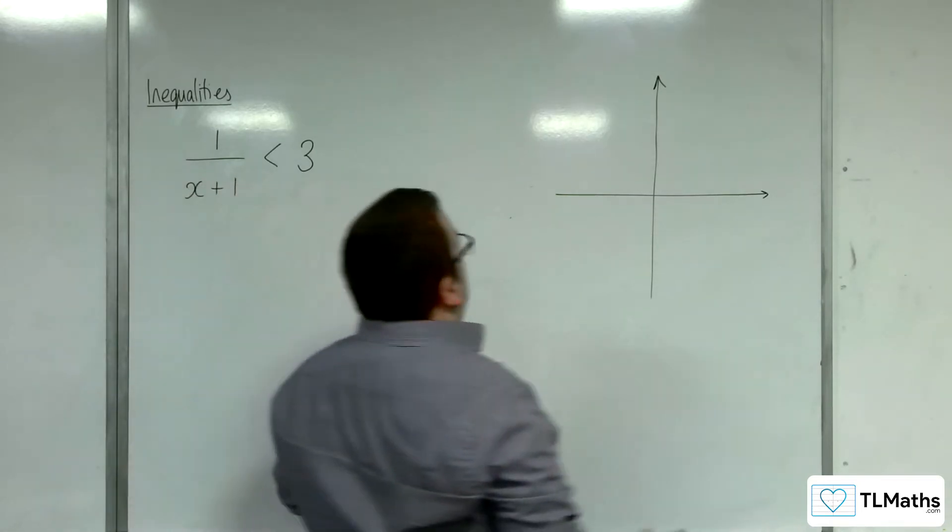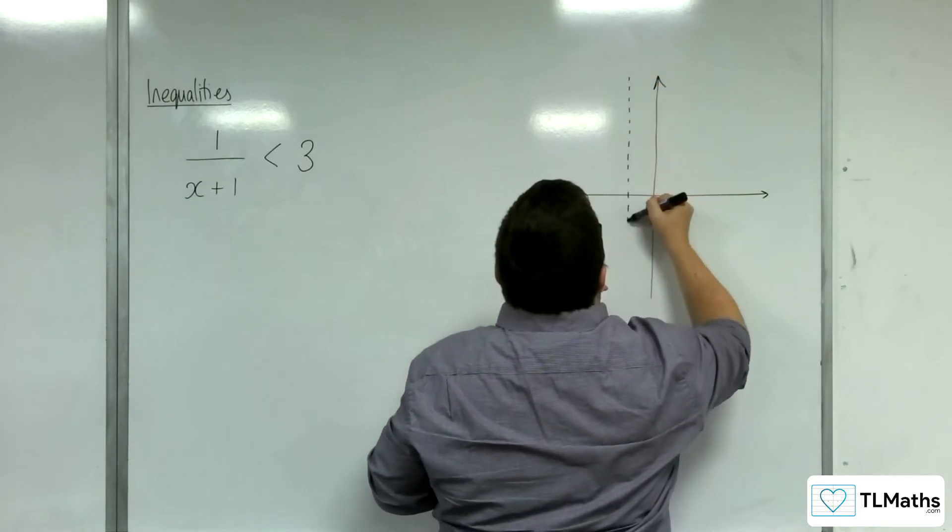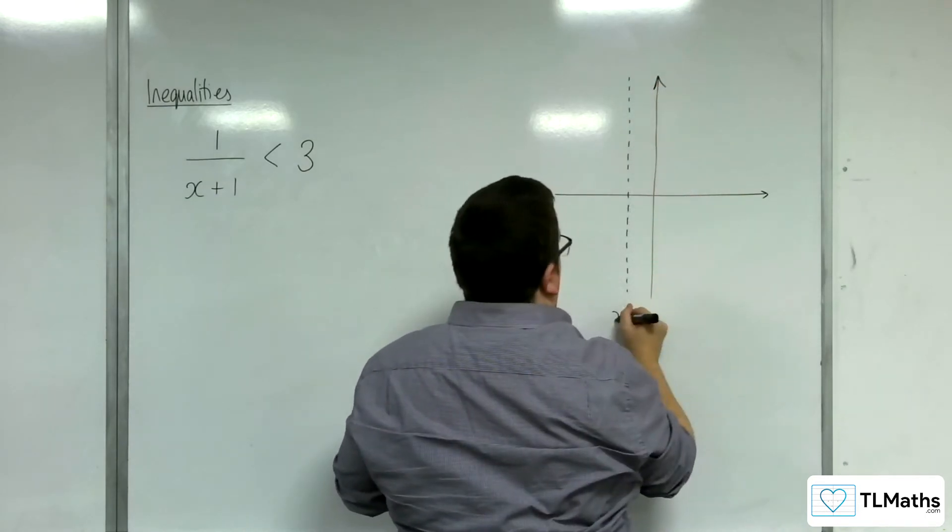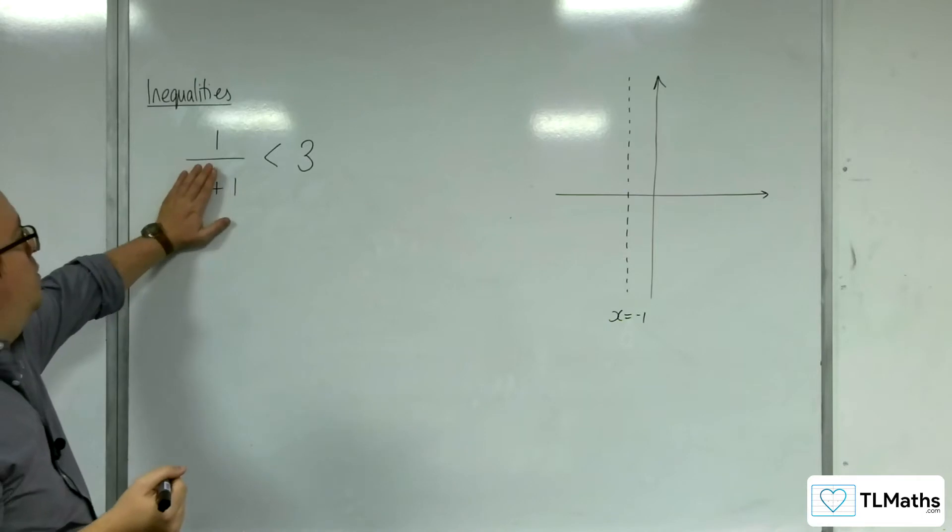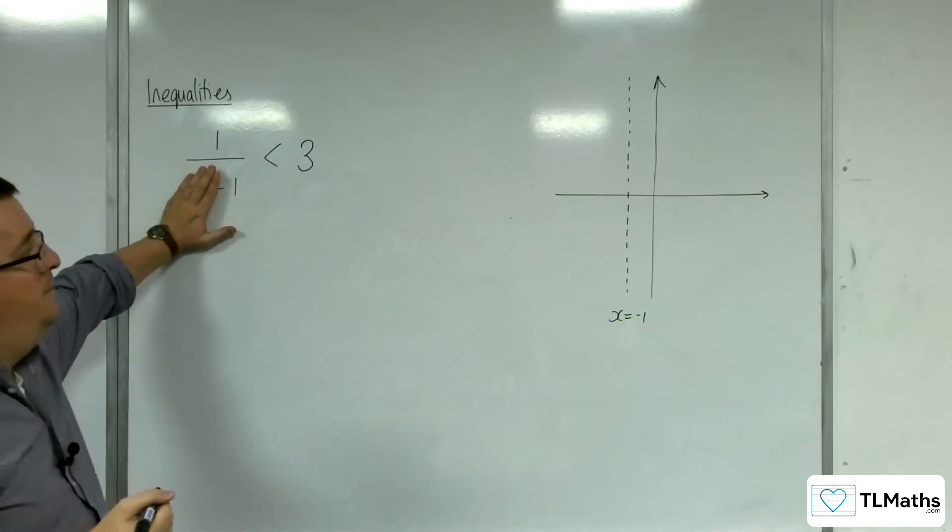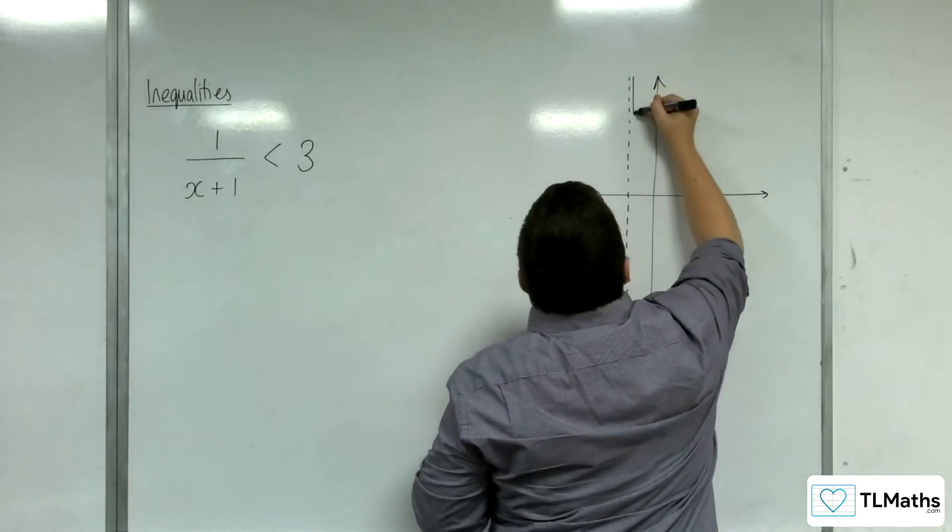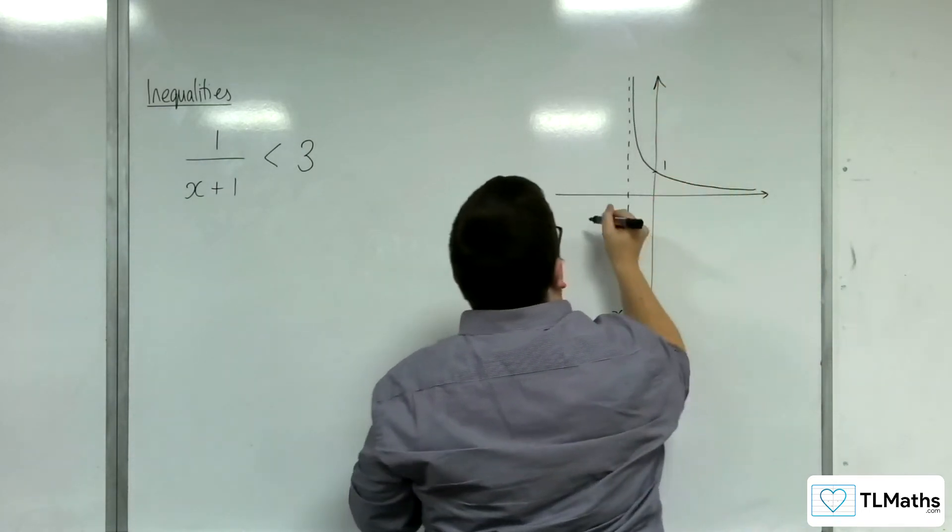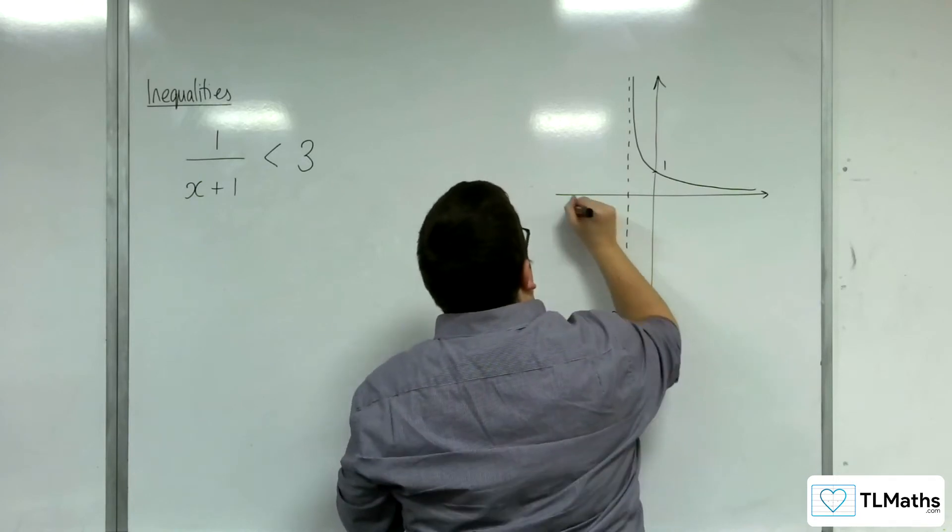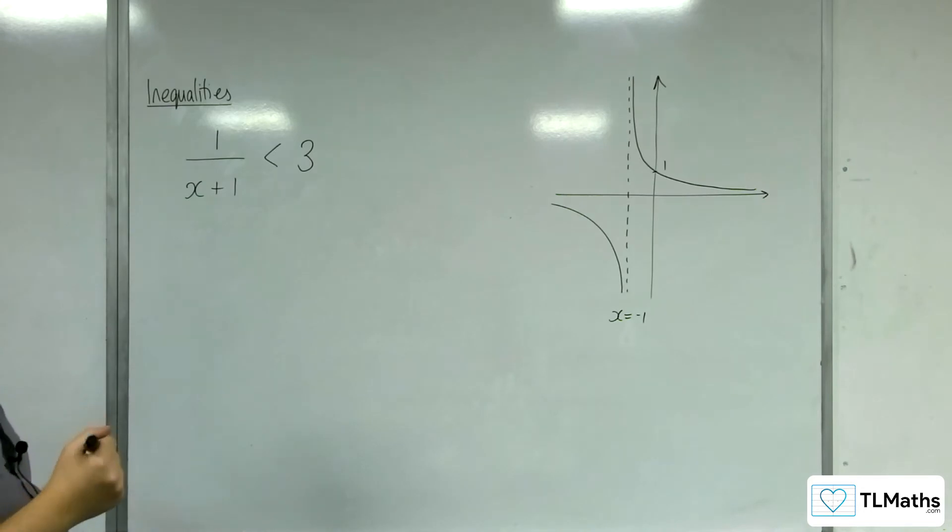I'll try and make sure that I'm drawing a relatively accurate sketch. So, 1 over x plus 1 will have a vertical asymptote at x equals minus 1, and it will be crossing through the y-axis when x is 0, which is 1 over 1.